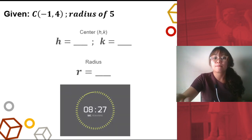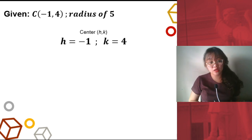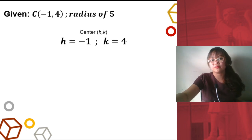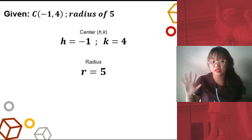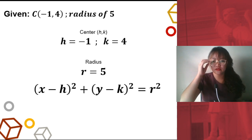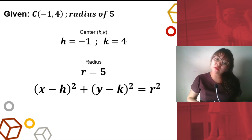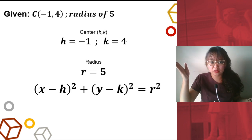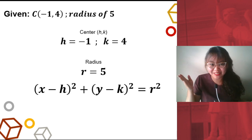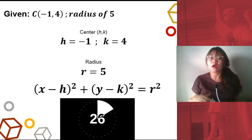Time's up! For the center, we identify h as negative 1 and k as 4. Then for the radius, we have r equals 5. Again, the standard form of the equation of a circle is: x minus h quantity squared, plus y minus k quantity squared, equals r squared. What do you do next given these values? You would be substituting! I'll give you time to substitute and simplify what you can simplify.